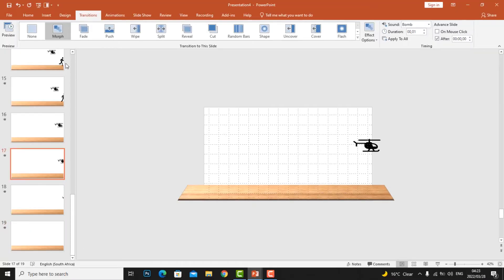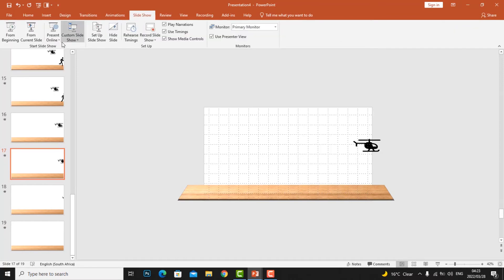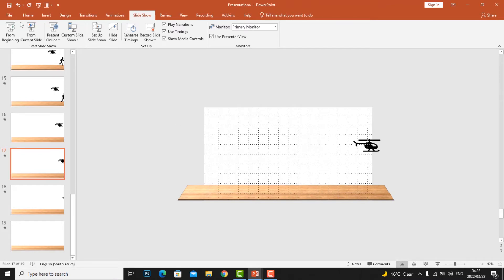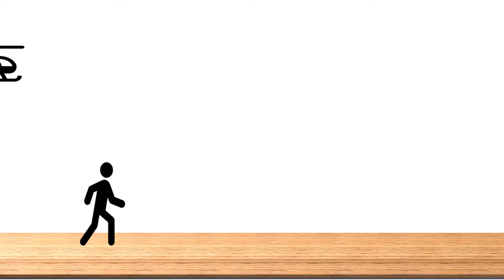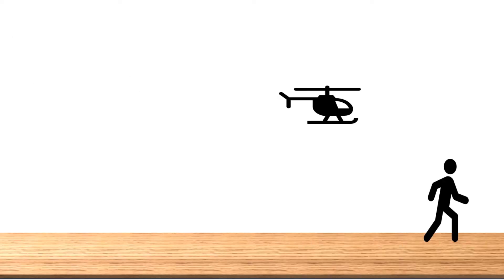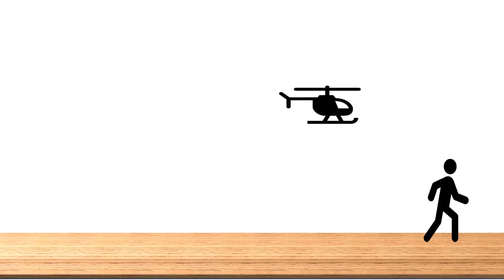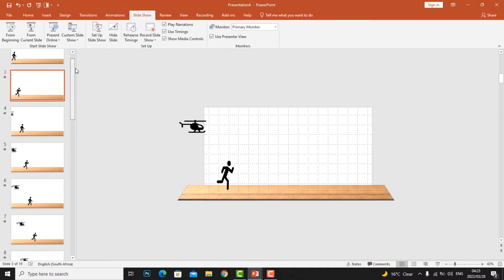In order for you to allow this to loop, go to Slide Show, Set Up Slide Show, and then put a Loop Continuously and say OK. From here, go to slide presentation from beginning. Now you can see — this is the whole scenario you can create — helicopter shooting.